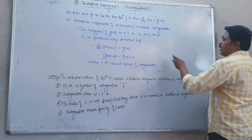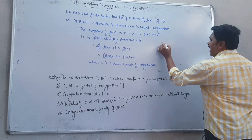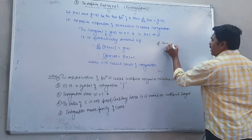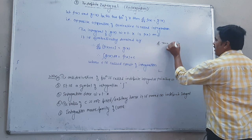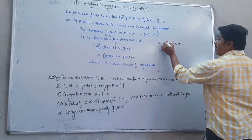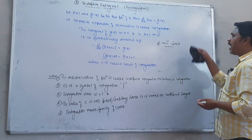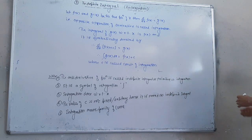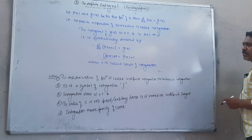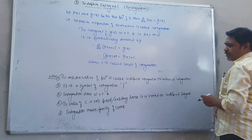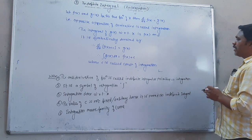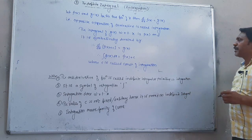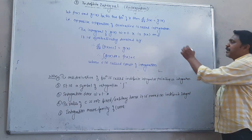So this is the conversion: sec squared x is the derivative of tan x. You can see that sec squared x integration gives tan x plus c. So c is a constant, called the constant of integration. And c is not fixed — it is arbitrary.